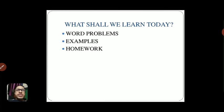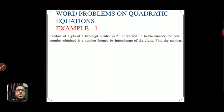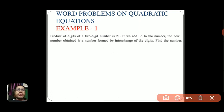Let's start with the first question. The question is: the product of digits of a two-digit number is 21. If we add 36 to the number, the new number obtained is the number found by interchange of the digits. Find the number. Word problems are easier to solve provided you understand each and every meaning of the given sentences.